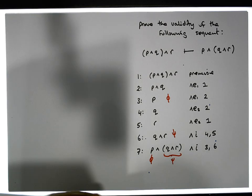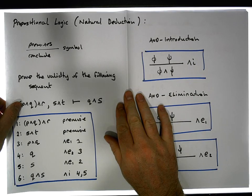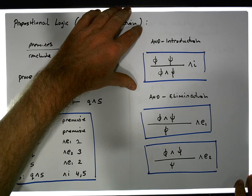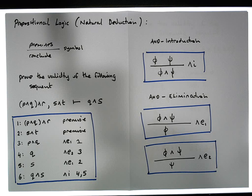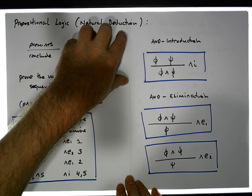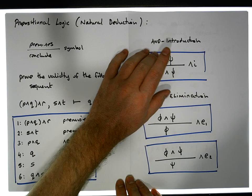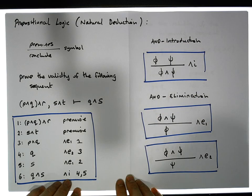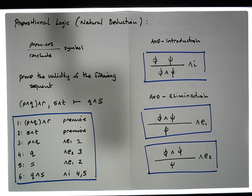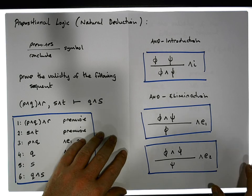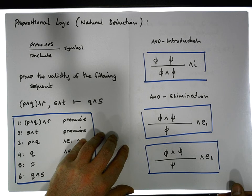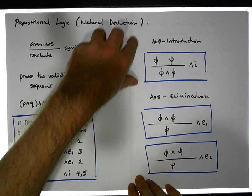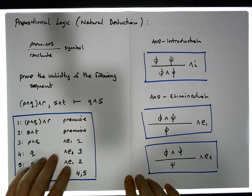Once again this was Jonathan Lambert with the Mathematics Development and Support Service of the National College of Ireland. In this video we concentrated on our first set of rules in a natural deduction system — specifically the AND rules for the introduction and elimination of ANDs within deductive proofs. I hope this video was intuitive and helpful. Thanks for watching.